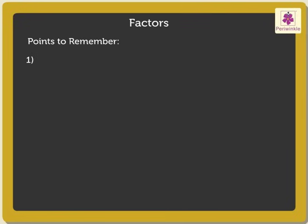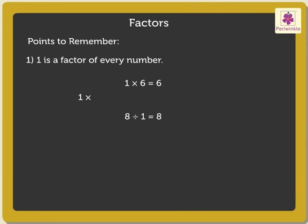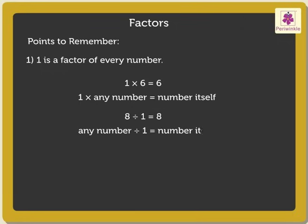Point 1: 1 is a factor of every number. Look at the examples. 1 into 6 is equal to 6. 8 divided by 1 is equal to 8. Thus, 1 multiplied by any number gives the number itself as the product. And any number divided by 1 also gives the number itself as the quotient. Hence, we conclude that 1 is a factor of every number.